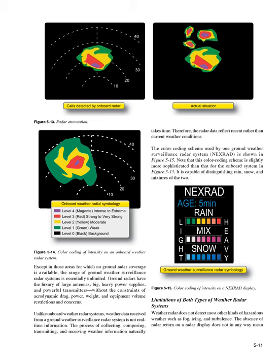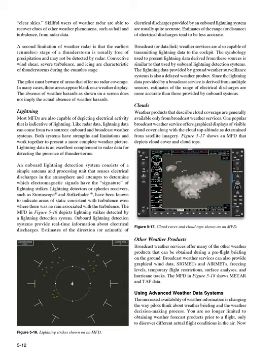Limitations of both types of weather radar systems: weather radar does not detect most other kinds of hazardous weather such as fog, icing, and turbulence. The absence of radar return on a radar display does not in any way mean clear skies. Skillful users of weather radar are able to recover clues of other weather phenomena, such as hail and turbulence, from radar data. A second limitation of weather radar is that the earliest, cumulus, stage of a thunderstorm is usually free of precipitation and may not be detected by radar. Convective wind shear, severe turbulence, and icing are characteristic of thunderstorms during the cumulus stage. The pilot must beware of areas that offer no radar coverage. In many cases, these areas appear blank on a weather display. The absence of weather hazards as shown on a screen does not imply the actual absence of weather hazards.